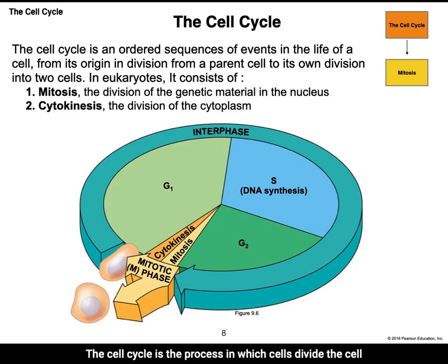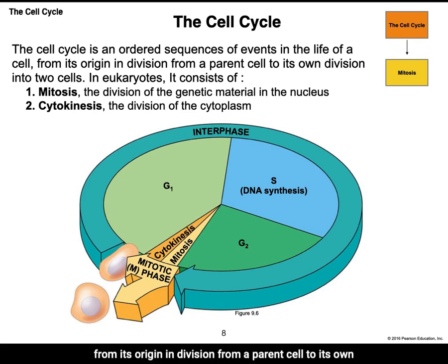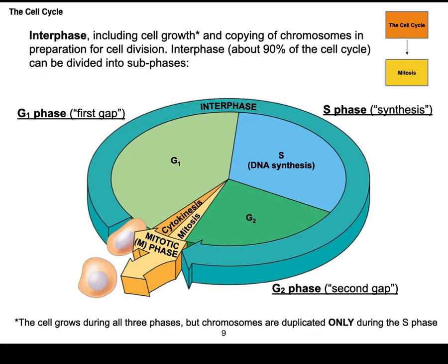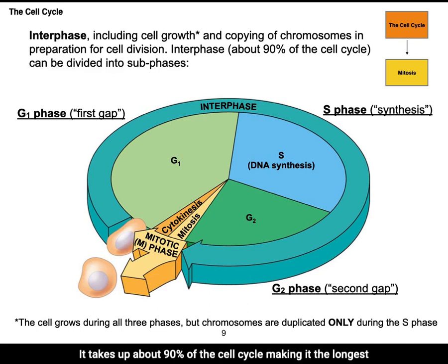The cell cycle is the process in which cells divide — an ordered sequence of events from a cell's origin from a parent cell to its own division into two cells. In eukaryotes, the cell cycle consists of two main phases: mitosis, which is the division of the genetic material, and cytokinesis, which is the division of the cytoplasm. The first stage is interphase, which takes up about 90 percent of the cell cycle, making it the longest phase.